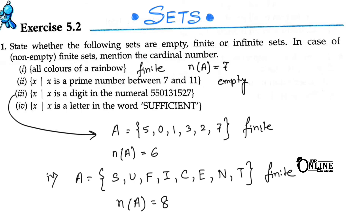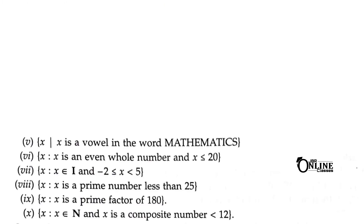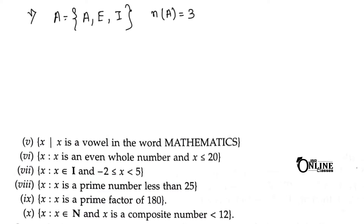Sum number 5: x is a vowel in the word 'mathematics'. The vowels are a, e, and i, so there are a total of three vowels. The cardinal number is three, and it is definitely a finite set.